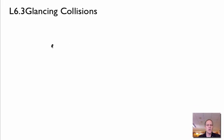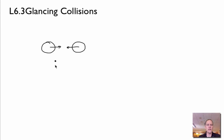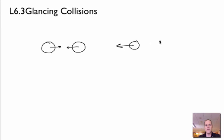With glancing collisions, we're no longer looking at two objects heading towards each other and directly hitting each other center of mass and bouncing off. So if that was the condition before collision, we might have after collision this one moving off in that direction and this one stopping. We don't have that condition anymore.